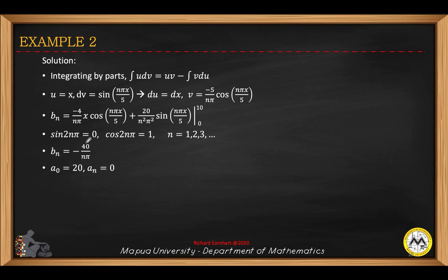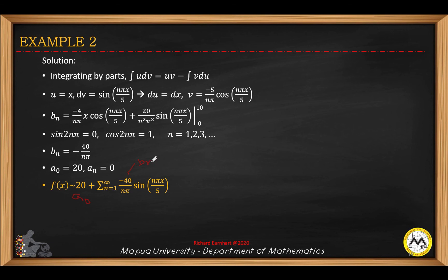From the previous results, we have a sub zero equals 20, a sub n equals zero. Substituting into the Fourier series formula: a sub zero gives the first term, the cosine terms are zero since a sub n equals zero, and b sub n is negative 40 over nπ, multiplied by sine(nπx/l) where l equals 5. This gives the formula for the Fourier series.